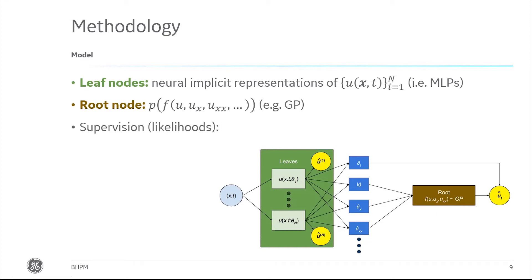Given that model setup, let's talk about how we supervise it or the evidence we provide to do Bayesian inference. The first part is we're going to use the observations from our data set directly, those U hats, and define a likelihood with respect to the function encoded by the leaf nodes here. The second part is going to be a likelihood associated with the physics, meaning the prediction from this root is compared to the time derivative of these fields captured in the leaves, shown by this blue partial-by-partial-T block. All of these are computed using automatic differentiation applied to the MLPs with respect to the inputs as opposed to the parameters.